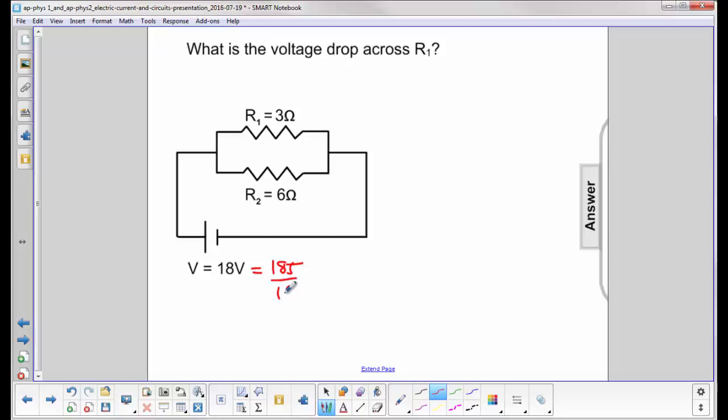So every coulomb of charge that goes through here gets 18 joules of energy. It then goes through resistors where that energy is transformed into thermal energy and then each charge winds up with zero energy and is just being pushed along by the people in front of it.